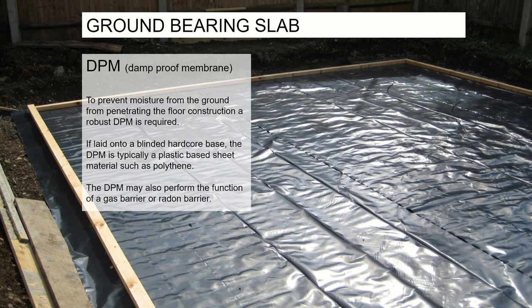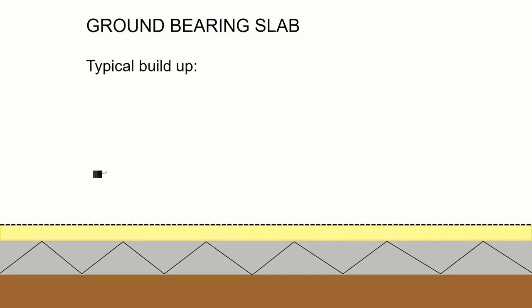On top of the blinding we install the damp proof membrane, which prevents moisture from the ground penetrating up through the floor construction. Everything below — the sub-base and blinding — is effectively wet or has the potential to be wet. The DPM is essentially a large polythene sheet, like a very thick plastic bag, laid out in rows with seams taped using specialist double-sided tape and sealed again. Around Aberdeen, where there's a lot of granite, the DPM can also act as a radon gas barrier to stop radioactive gas entering the house.